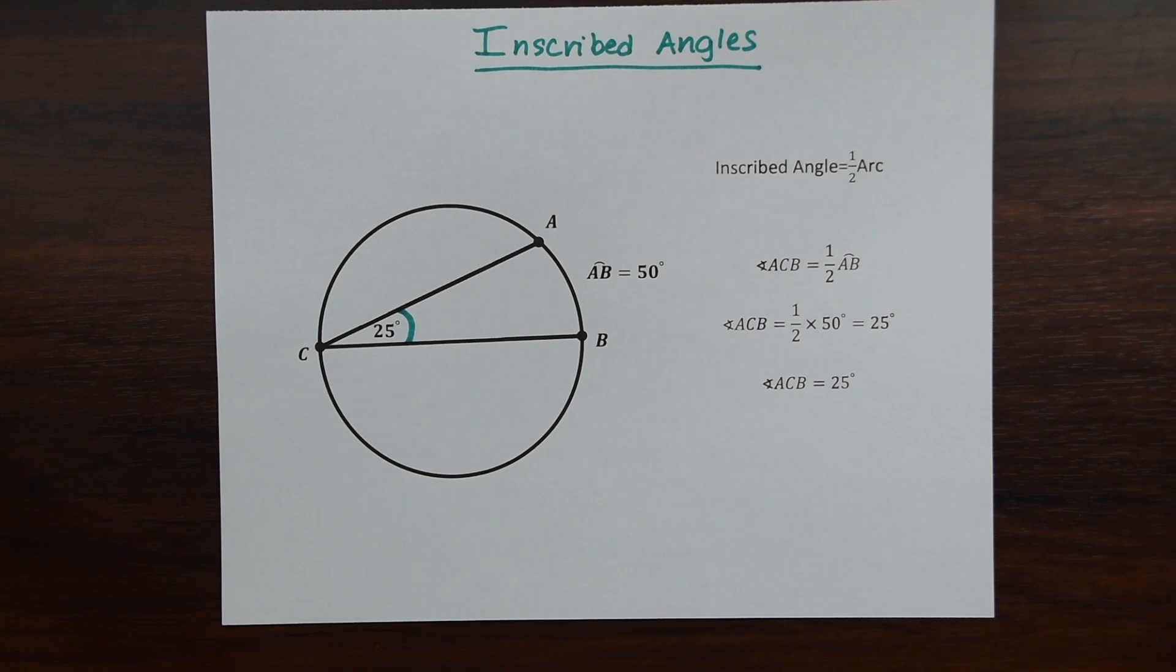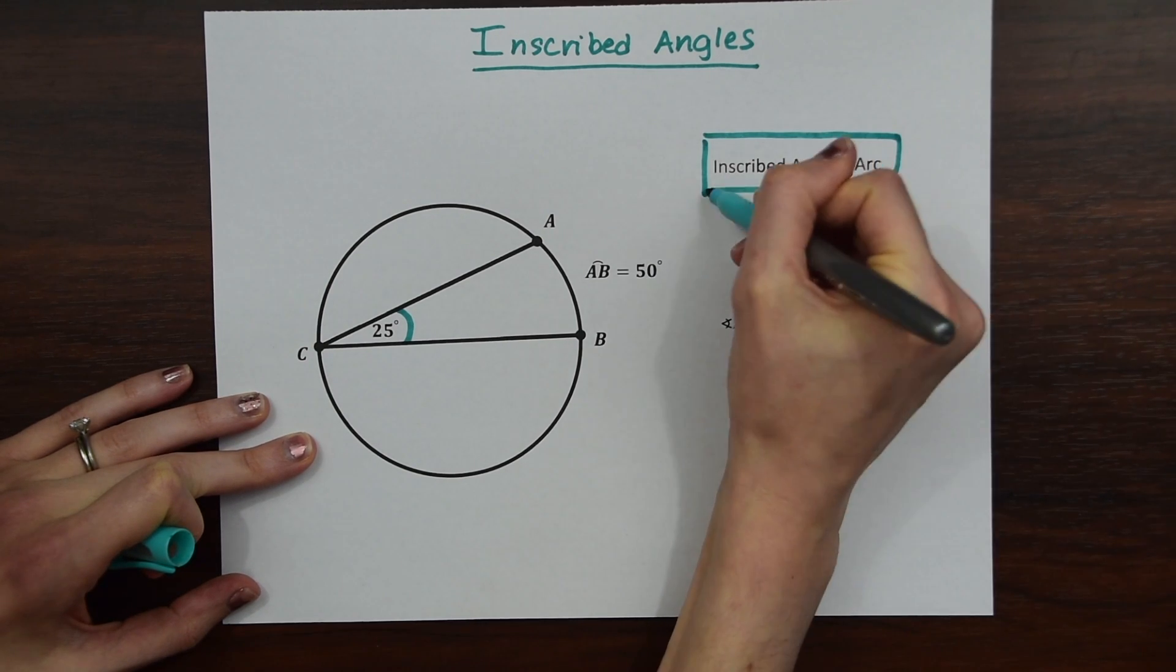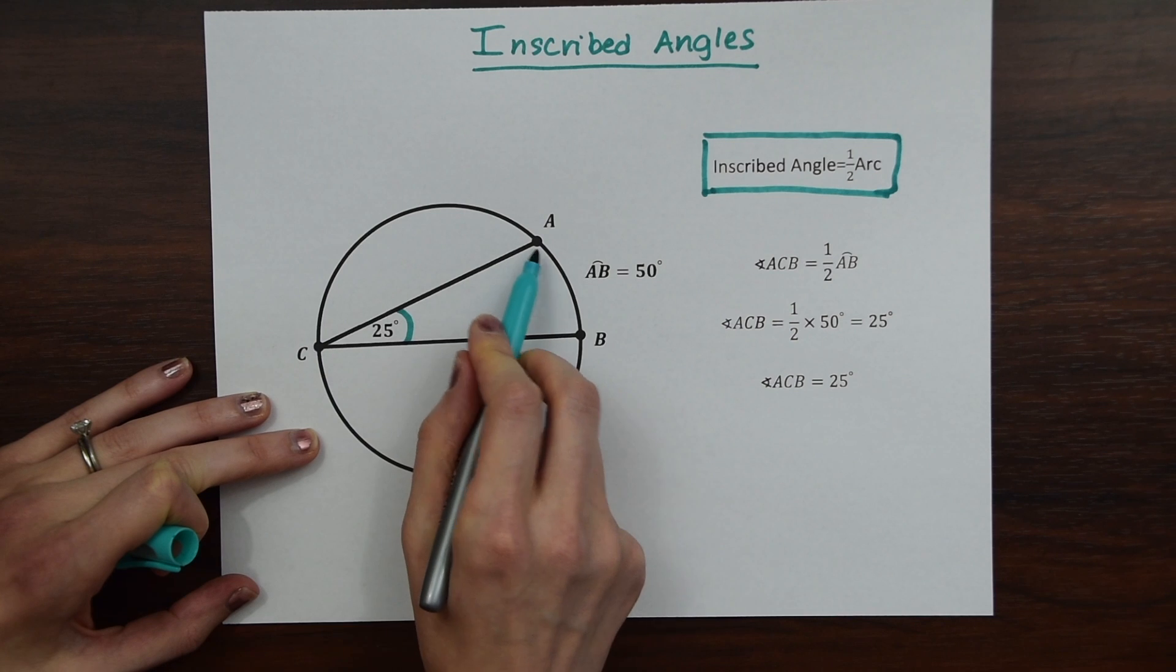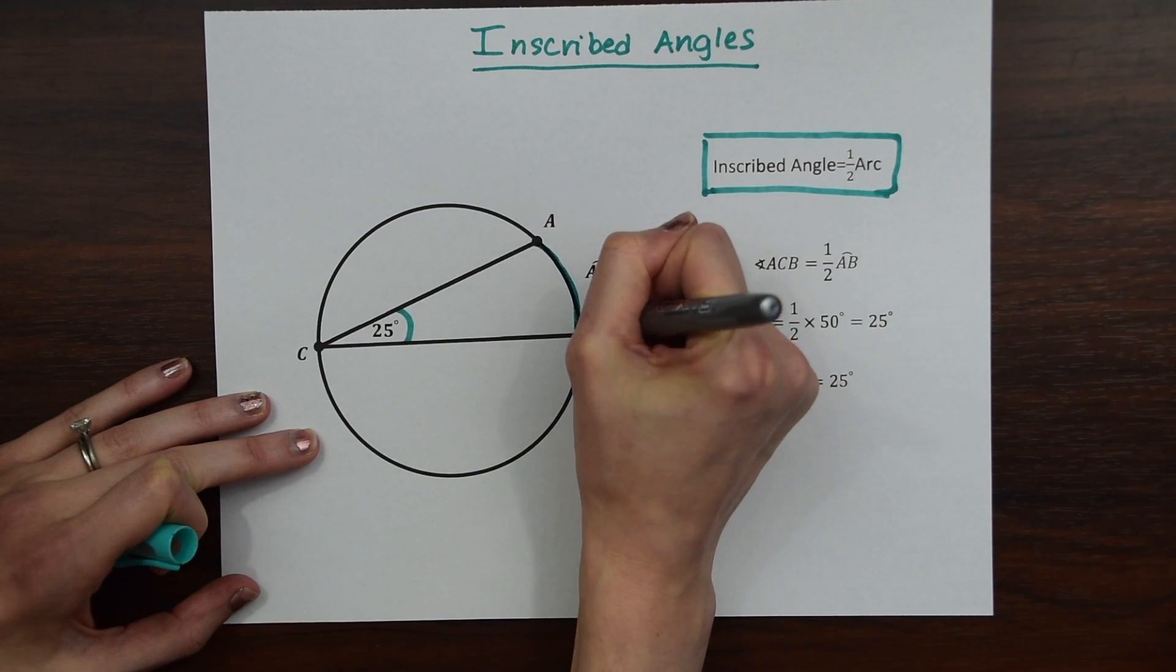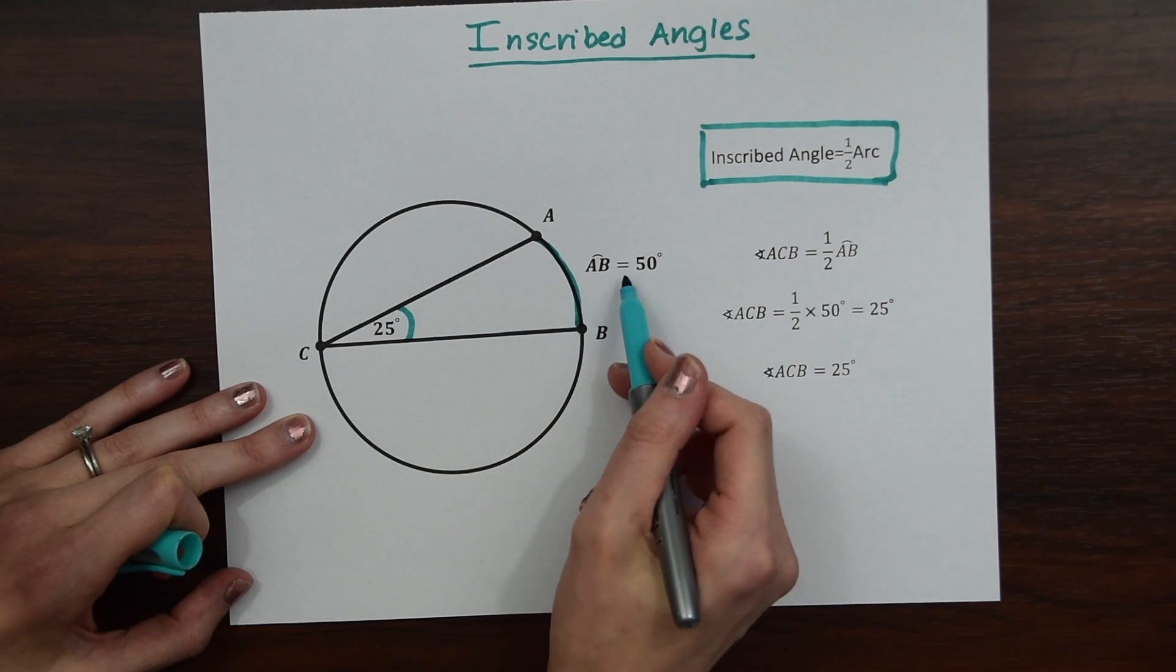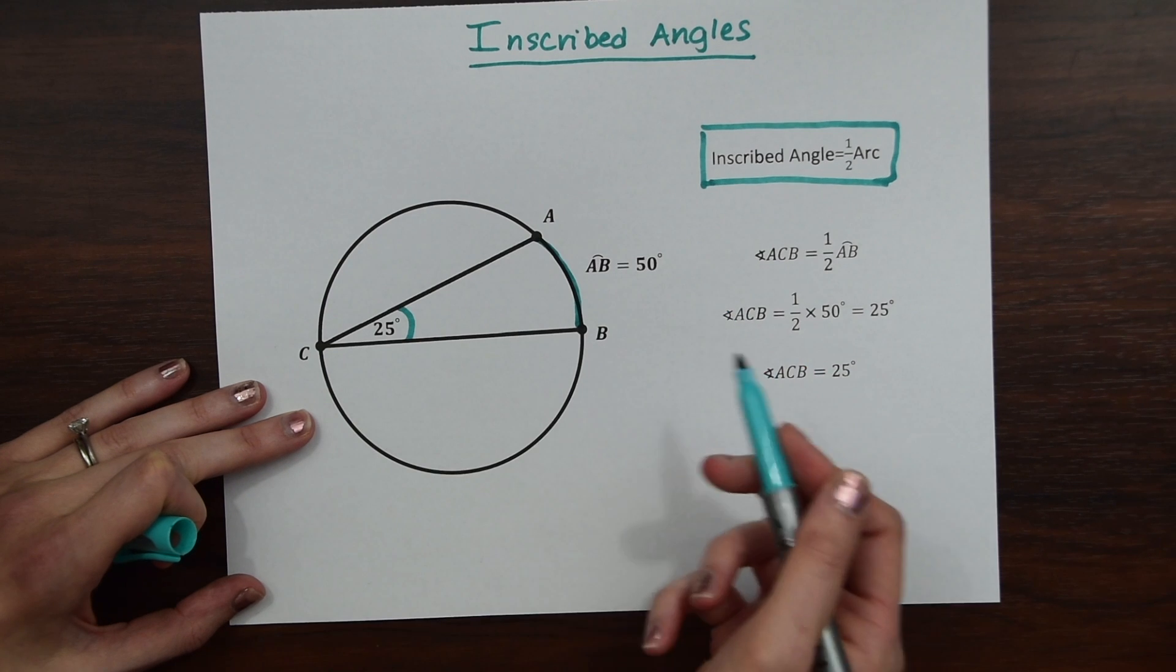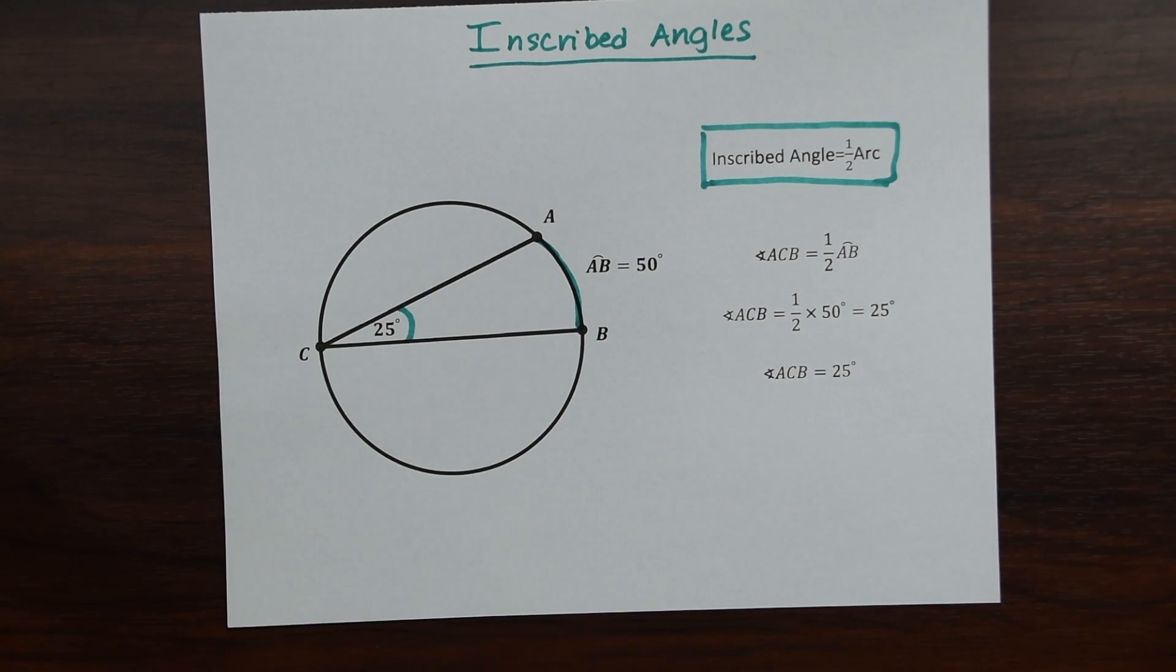There's rules about inscribed angles where an inscribed angle is always half the value of the arc that it's intercepting. So notice that this angle here, angle C, goes along with this arc right here, arc AB. Notice that this is 25 degrees, the angle, and then the arc is 50 degrees, double the amount, or you could say that the angle is half the arc. So this is the main rule to know with inscribed angles, and this is going to lead to three different theorems that we're going to go over today.